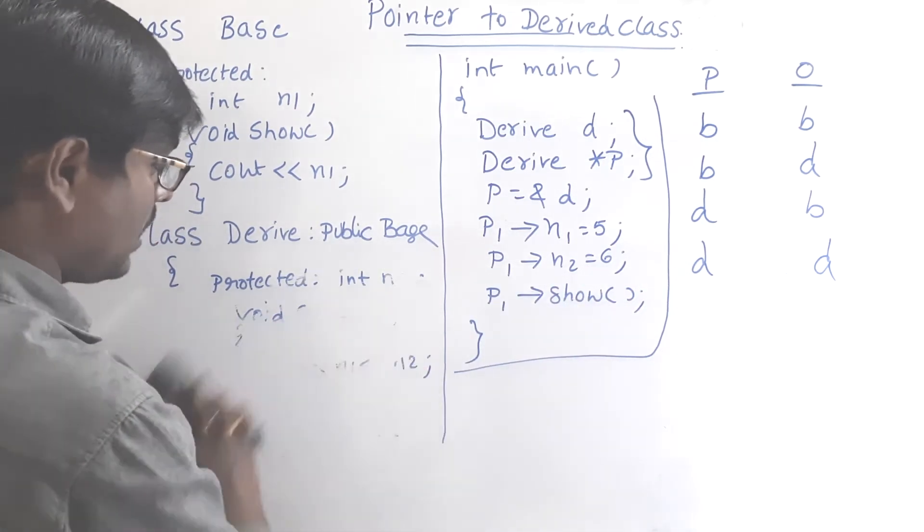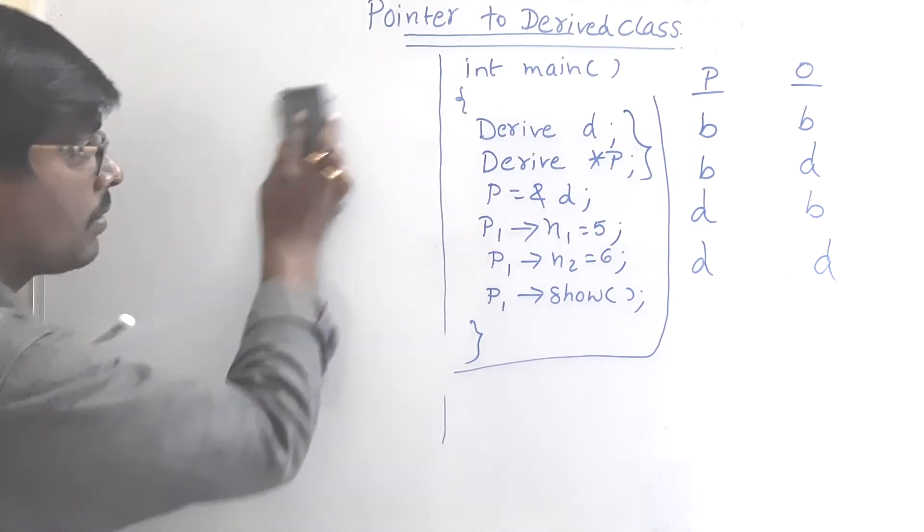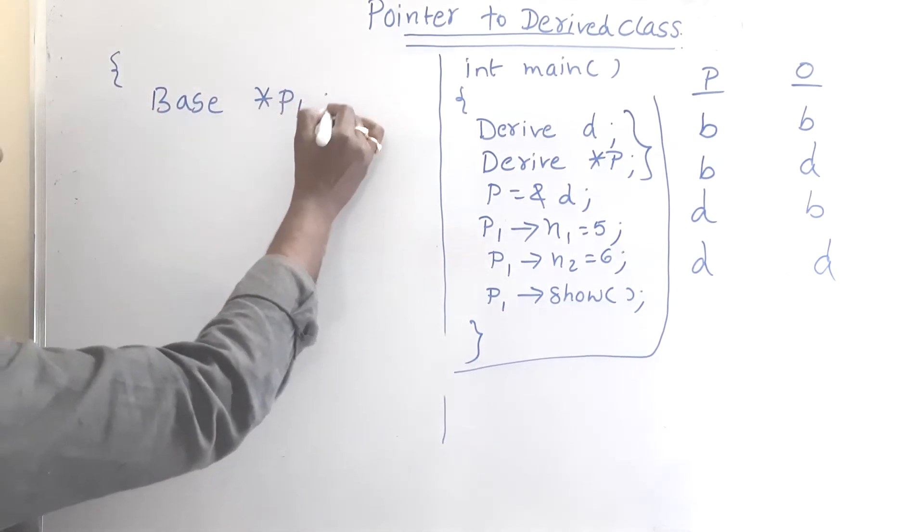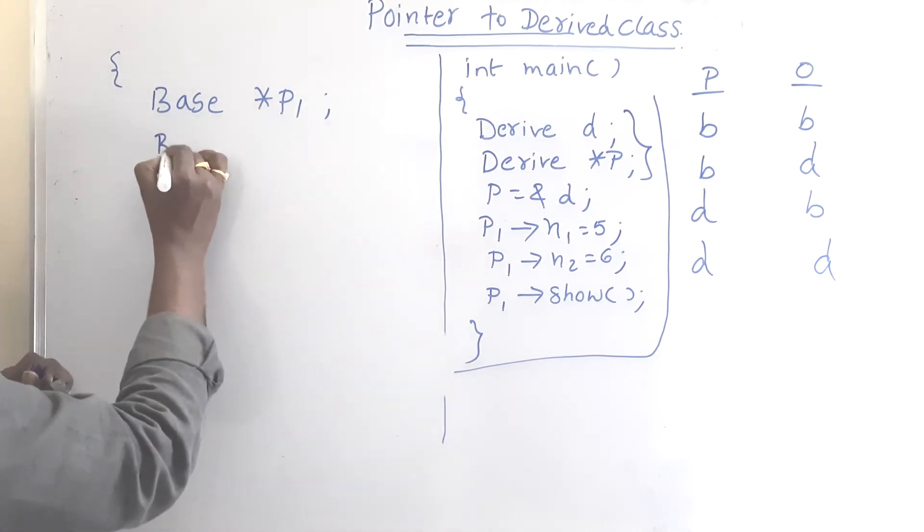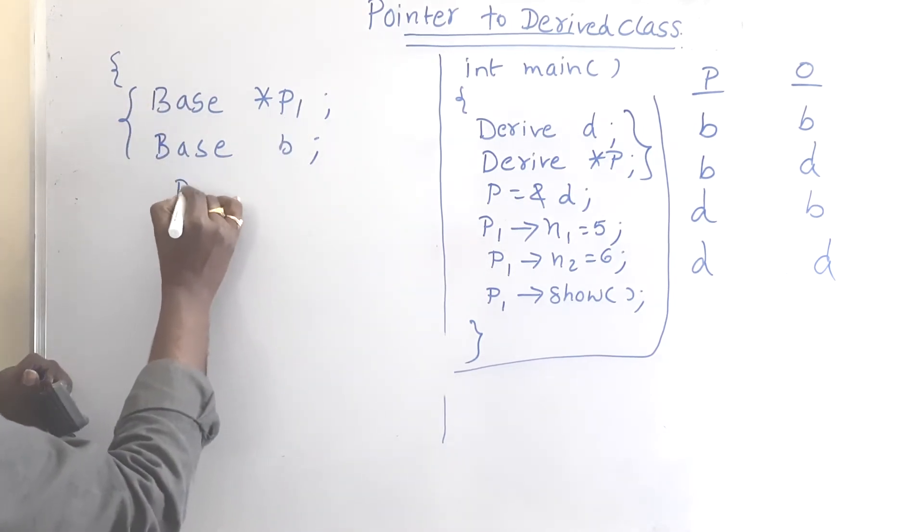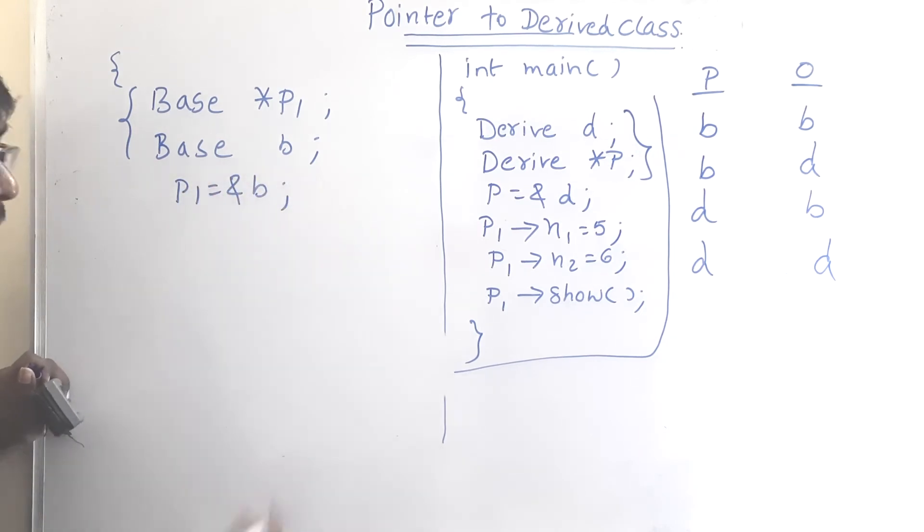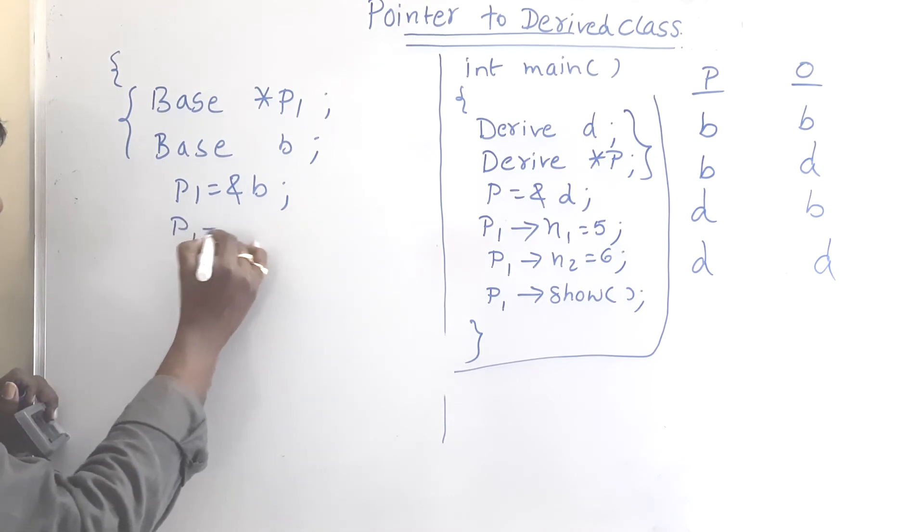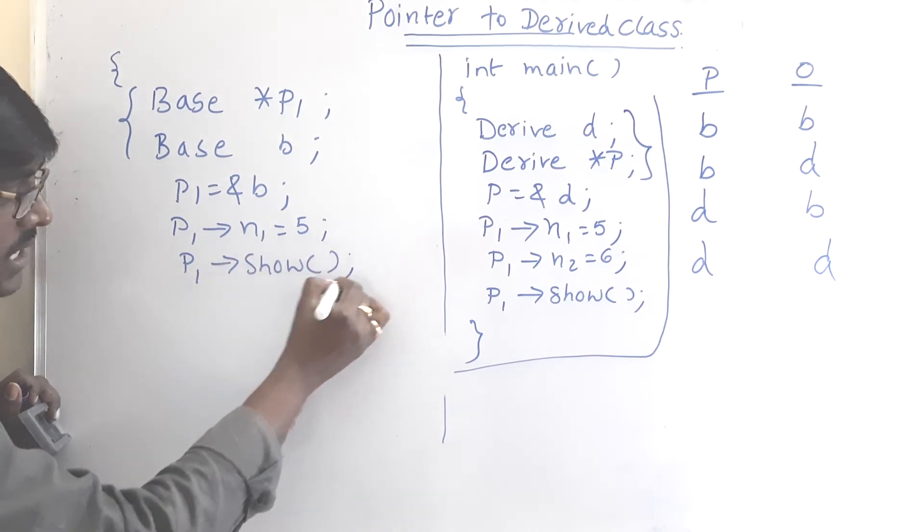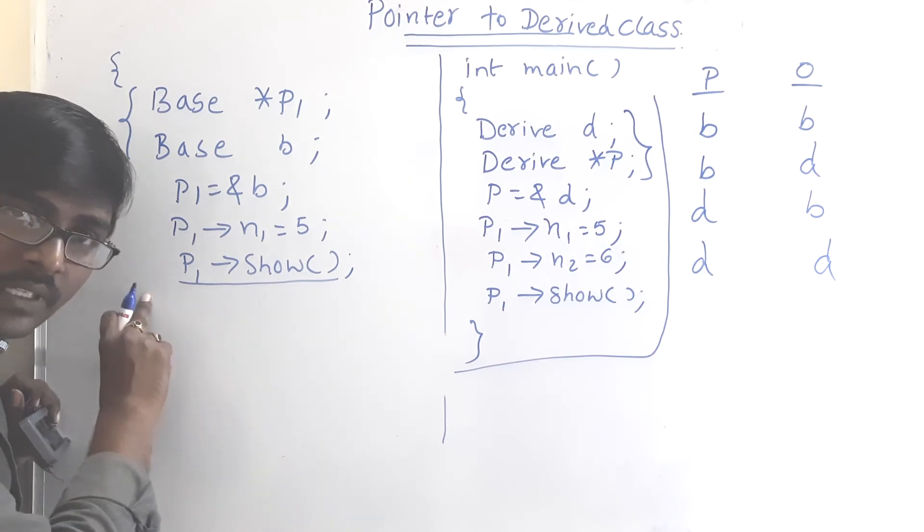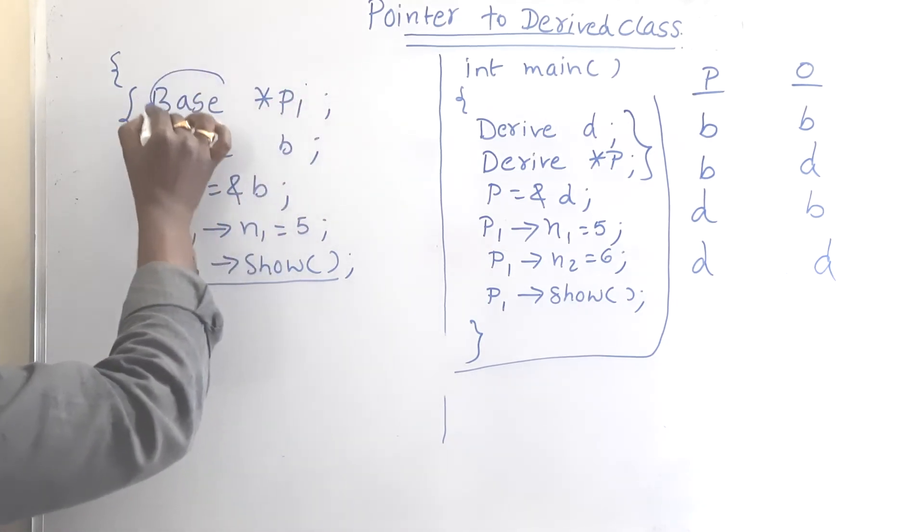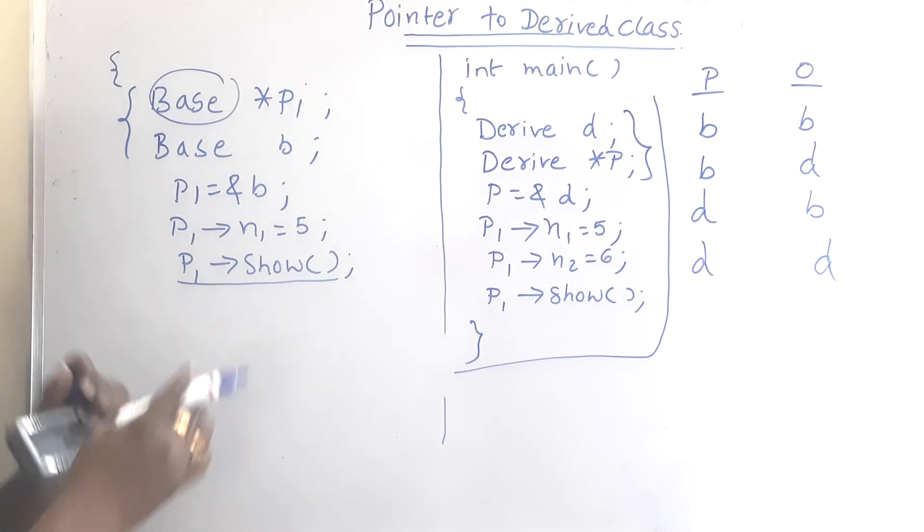Within the main I am declaring like this: base star p1. Pointer is base class. And suppose base b, object is also base class. Suppose p1 is equal to ampersand b. By using this one we can access p1 arrow n1, p1 arrow show. So in this case which show method is called? In this case the parent class show method is executed. Why? Because the pointer is of type base. This is one case.